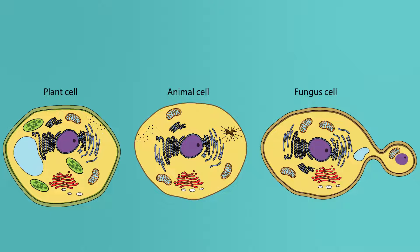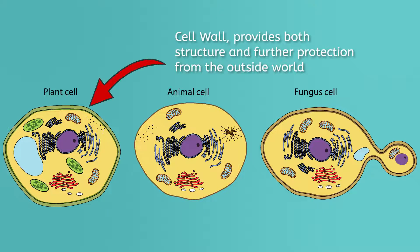Let's go deeper to explore the differences between plant, animal, and fungal cells. Plant cells have a rigid cell wall around their cell membrane, providing both structure and further protection from the outside world. Some fungal cells have a different type of cell wall, while animal cells don't have any sort of cell wall.